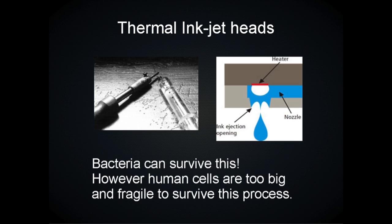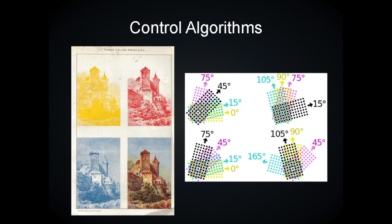Next they looked at control algorithms. A DIY Bio or Bio Curious group had done a project inkjet printing bacteria about two years prior. They wanted to do two colors. Why not use a regular 2D printer? It turns out regular 2D printers use an overlap pattern, which isn't good for science — most bacterial science requires discrete boundaries. This ruled out modifying an existing 2D printer; they needed to create their own control algorithms.